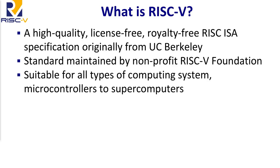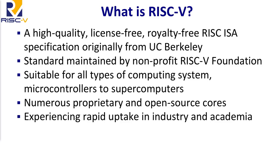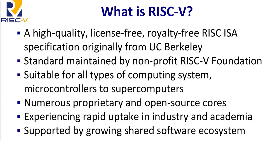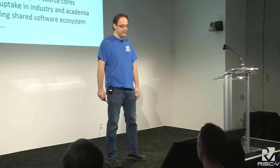It's suitable for all types of computing systems, everything from microcontrollers to supercomputers. What's it good for? The spec can let you do anything — it's up to a business decision which ones you actually go for. There are numerous proprietary and open source cores, many different implementations available, and very rapid uptake in both industry and academia. There is a massively rapidly growing shared software ecosystem, which is really the crown jewel of RISC-V — all this software that will run on any implementation you build. It's a work in progress; things are happening extremely fast.